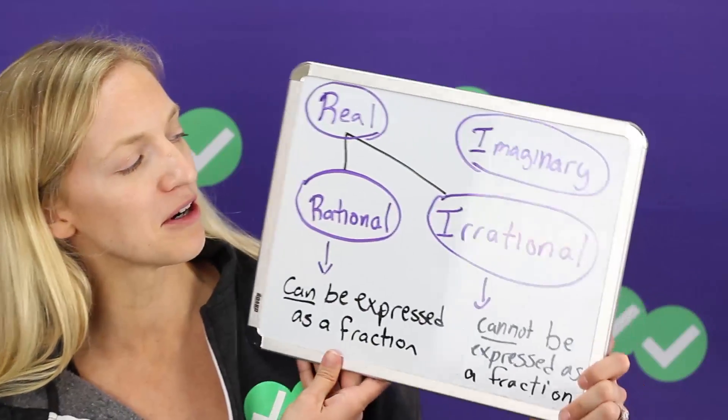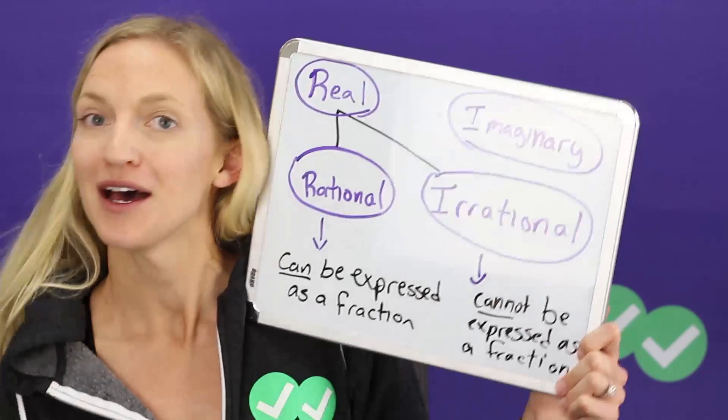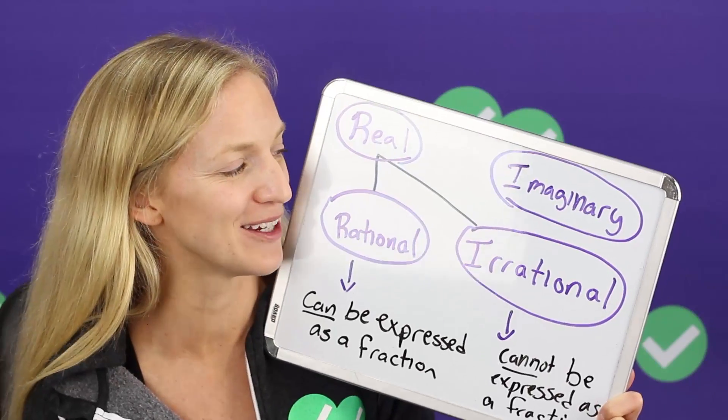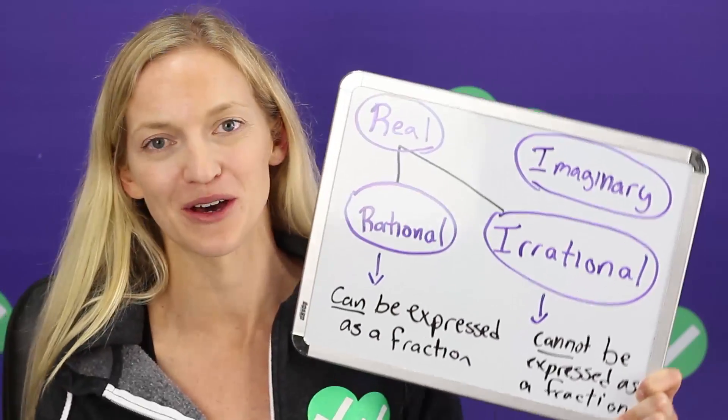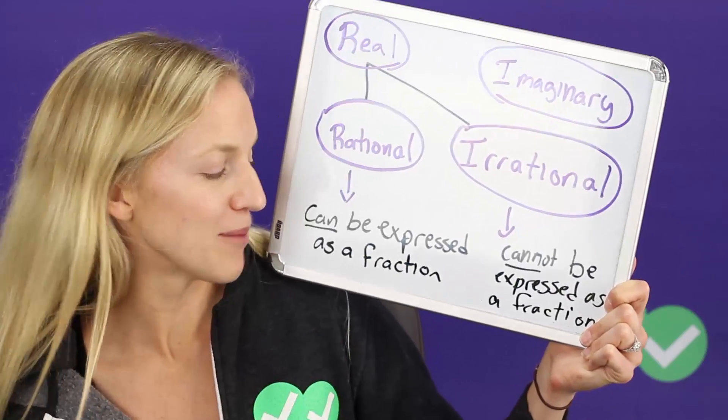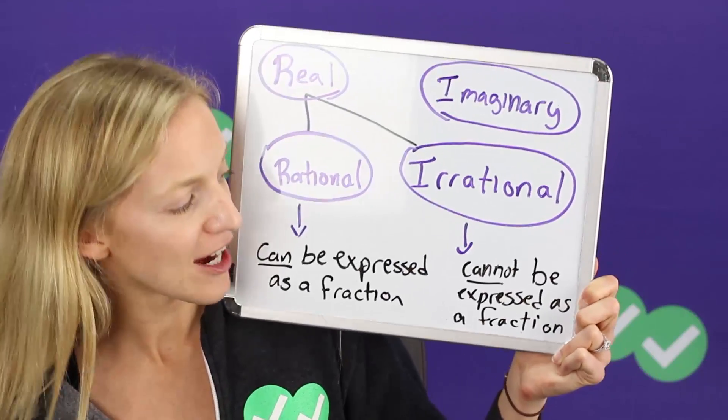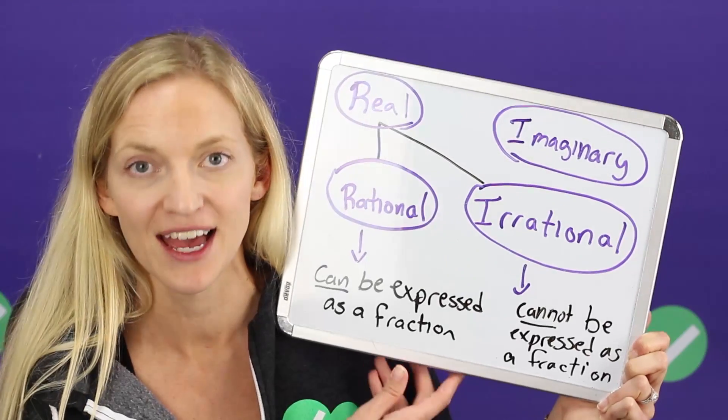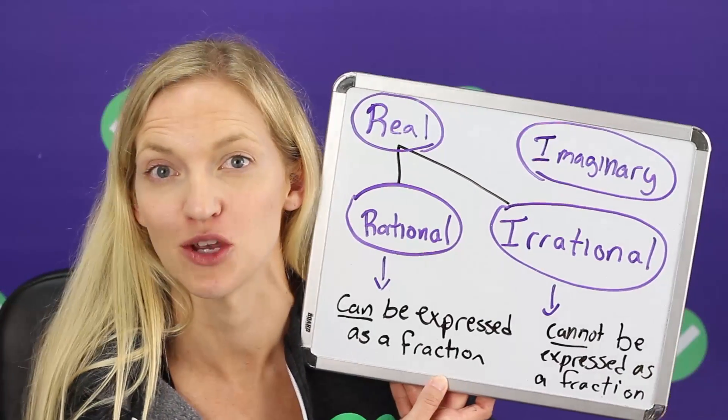So we have real numbers and we have imaginary numbers. Imaginary numbers are a whole other topic and we have some videos on those as well. As far as real numbers go they can be either rational or irrational. Now rational numbers can be expressed as a fraction and irrational numbers cannot be expressed as a fraction. That's the definition you want to remember.